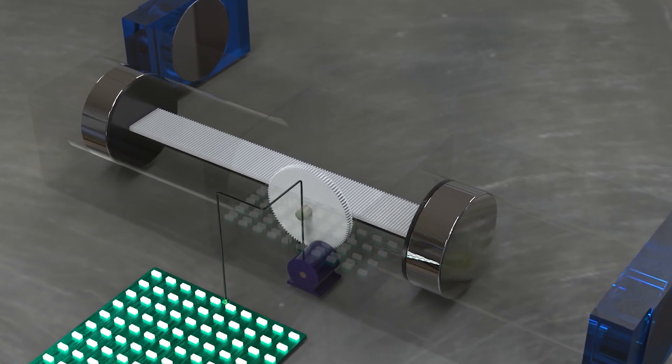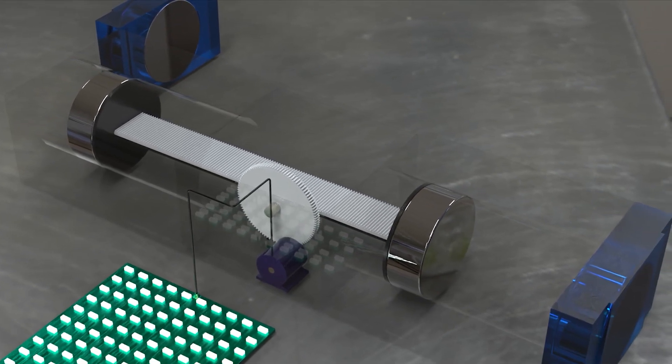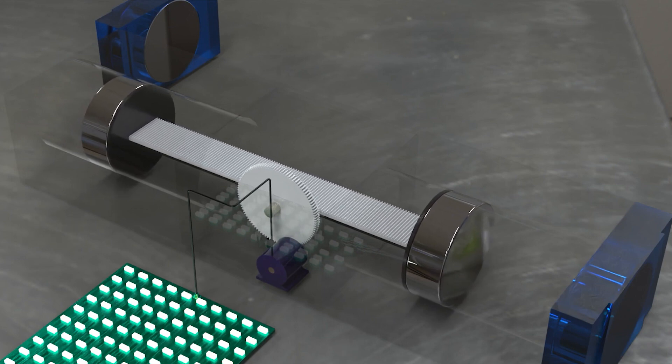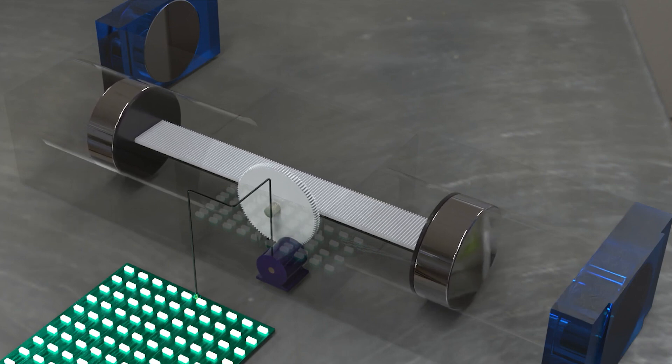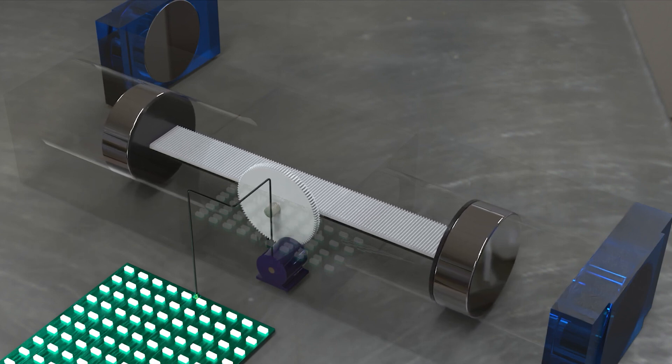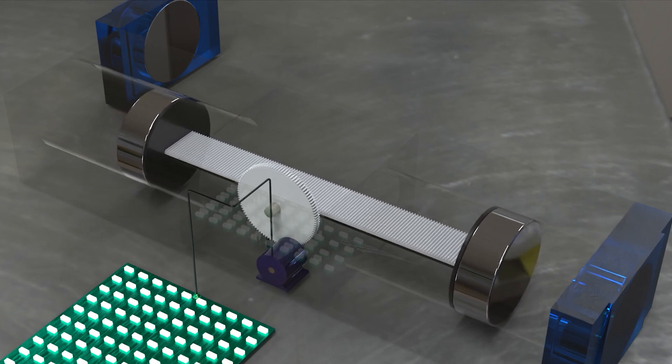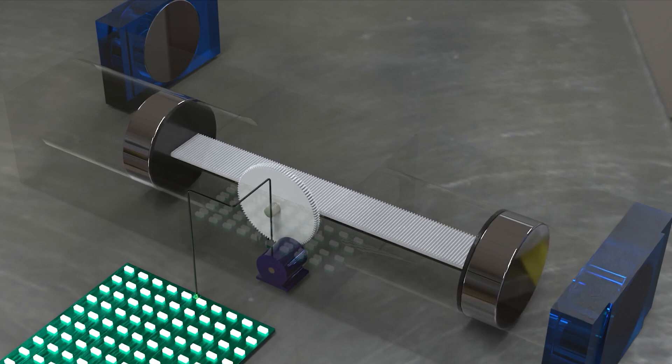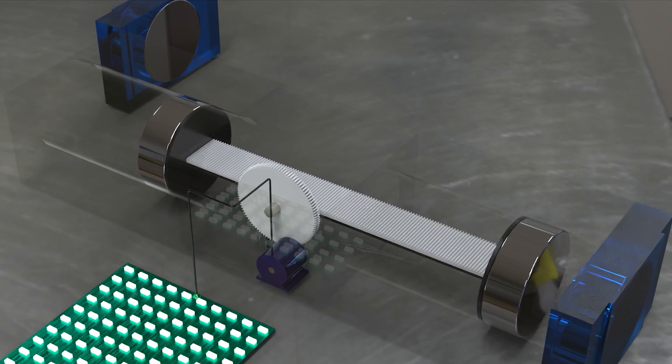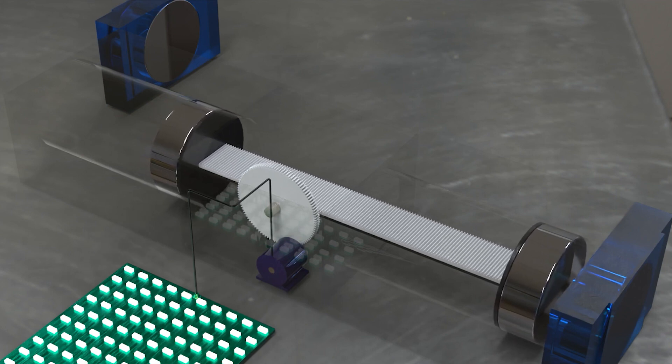The linear motion is cleverly converted into rotational energy as the linear gear interacts with the rotating gear. This ingenious mechanism effectively harnesses the linear movement and redirects it into a rotational motion, thereby generating usable energy. This innovative approach demonstrates the integration of magnetic force and mechanical systems, showcasing the potential for efficient energy conversion in unique and innovative ways.